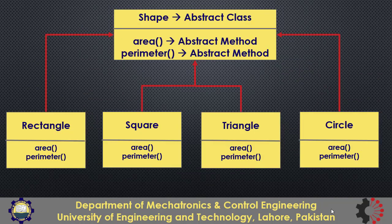Here is another scenario that we will implement in code. There can be different shapes like rectangle, square, triangle, and circle. We want to create a class for each of these and make sure those classes have area and perimeter methods defined. This can be done by creating an abstract class named shape with abstract methods area and perimeter. All other classes should be inherited from it, and it will be mandatory for them to define these methods.